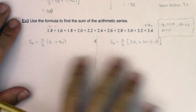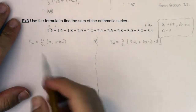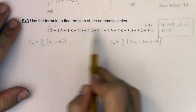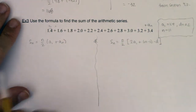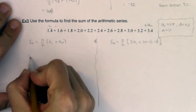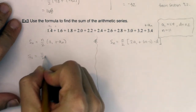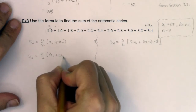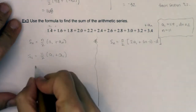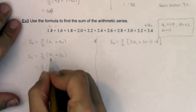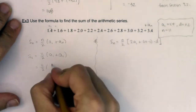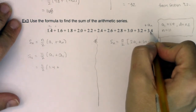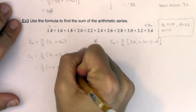Let me show you how to use either of these formulas to find the 11th partial sum — meaning we're adding the first 11 terms of the sequence together. If I want s_sub_11, using the first formula this is going to be 11 over 2 times (a_sub_1 plus a_sub_11). We knew a_sub_1 was 1.4, and a_sub_11 is 3.4.